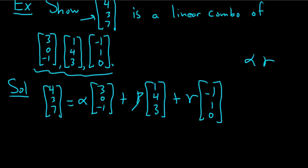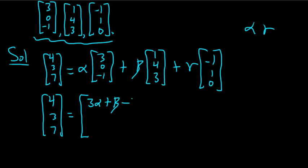So now we can just use properties of vector scalar multiplication and addition. On the left-hand side, we still have the vector 4, 3, 7. Here we can distribute the alpha. So we get 3 alpha plus beta minus gamma. And then the second entry would be 4 beta plus gamma. And the last one would be minus alpha plus 3 beta.